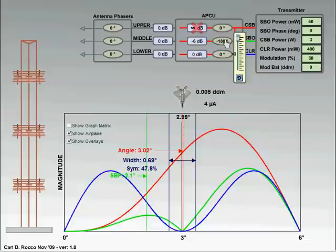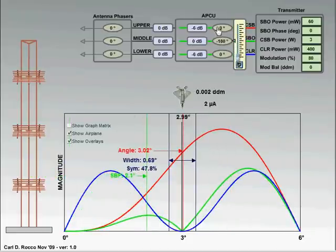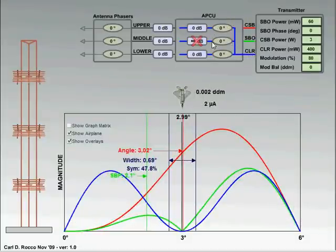But we can change any of these parameters and just see what happens, just to play around. I can go to SBO, I can change the phase, say to the middle antenna. And I can change all six of the parameters for each of the three signals.